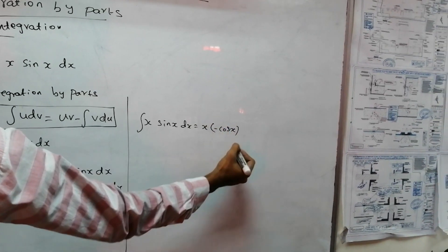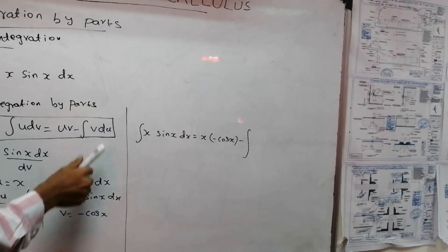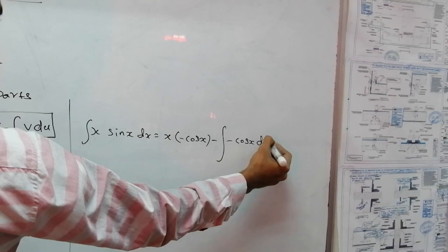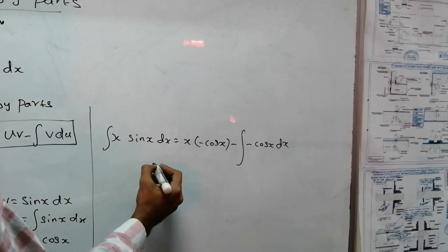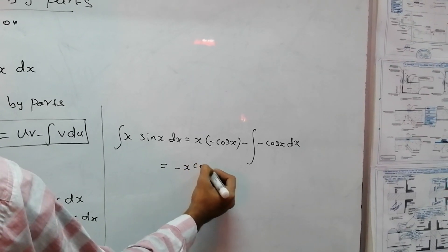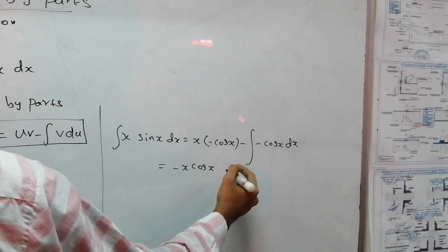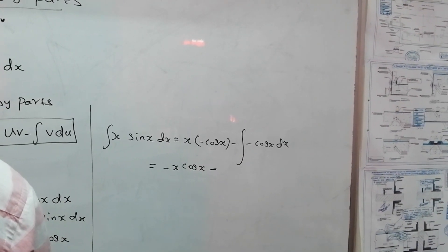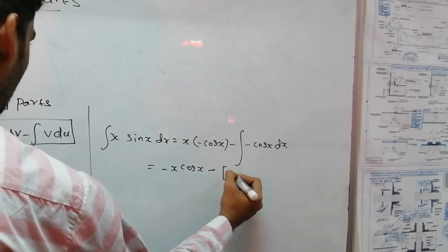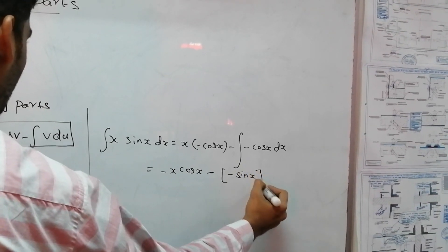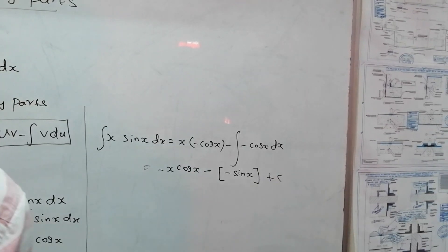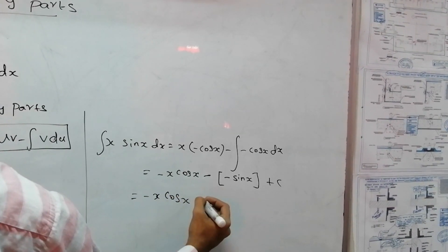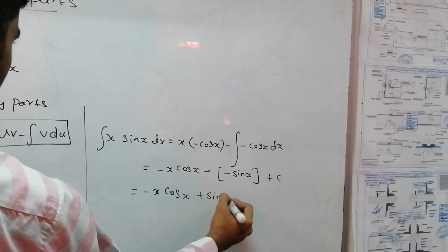Applying the formula: minus cos(x)·x, minus the integral of v, which is minus cos(x), times dx. This gives minus x·cos(x), and the integral of minus cos(x) is plus sin(x), plus the constant C.